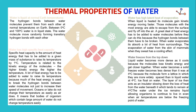Oceans or lakes do not change their temperature as easily as air does, meaning that bodies of organisms which contain large amounts of water do not change temperature easily. Water also has a high latent heat of evaporation. When a liquid is heated, its molecules gain kinetic energy and move faster. Those molecules with the most energy escape from the surface into the air. A great deal of heat energy has to be added to water molecules before they can do this because the hydrogen bonds between them have to be broken. When water evaporates, it absorbs a lot of heat from the surroundings — so the evaporation of water from the skin of mammals when they sweat has a cooling effect.